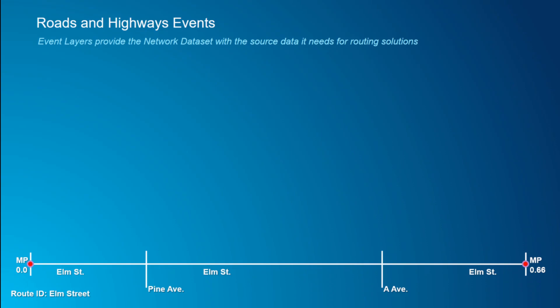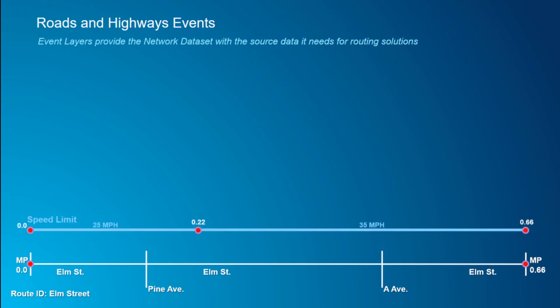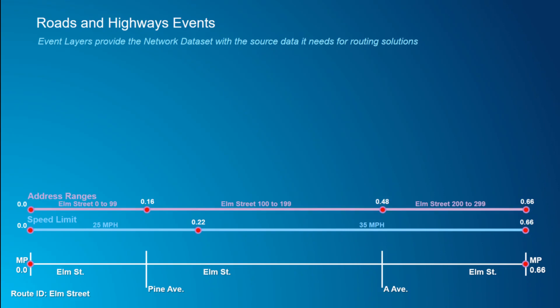So we've got a route ID and route measures. For simplicity, we'll call this route ILM. It's intersected by Pine and A Avenue and goes from 0 to 0.66 miles. I have my events: speed limit, address block ranges, and one-way streets — and there might be others like functional class, turn restrictions, overweight, oversized. I've got to take all of this data and merge it together in order to pass it into a network dataset, because network datasets don't know about events.